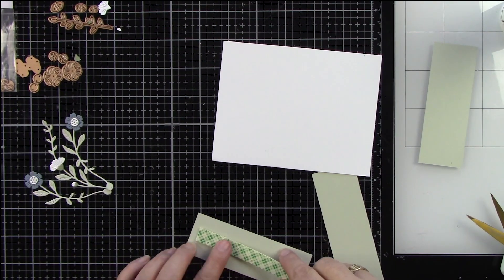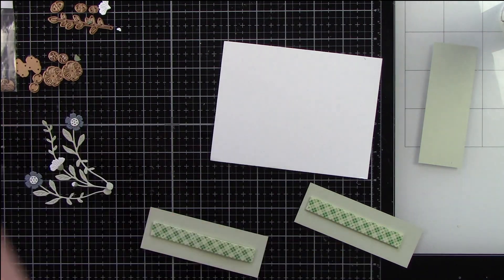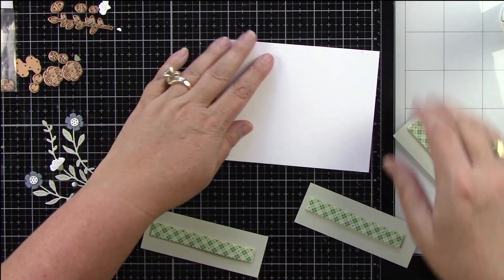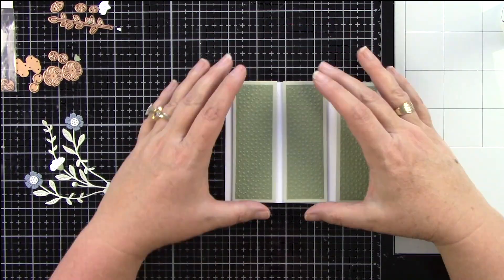So let's add some foam tape behind these. I do love these to have some dimension. I think that's really pretty so I'm just going to add some right to the center. Then I'm going to start with my center piece and kind of work my way out.